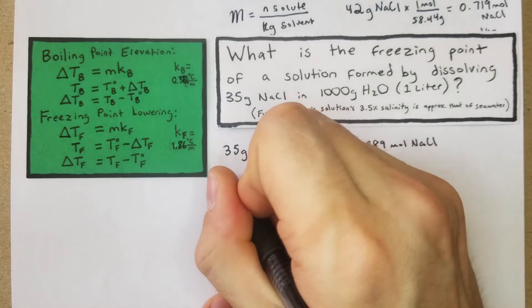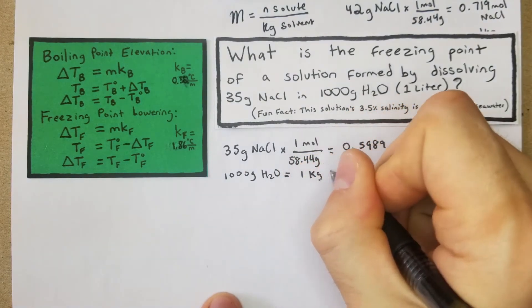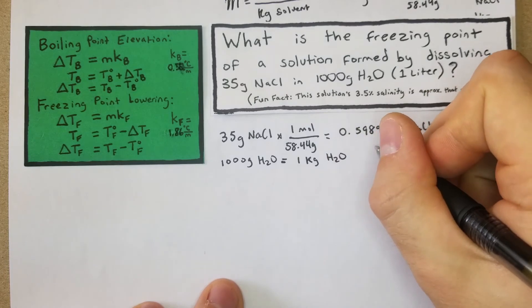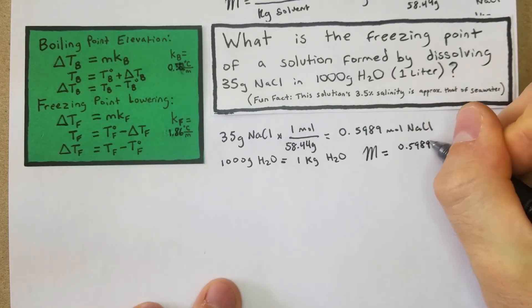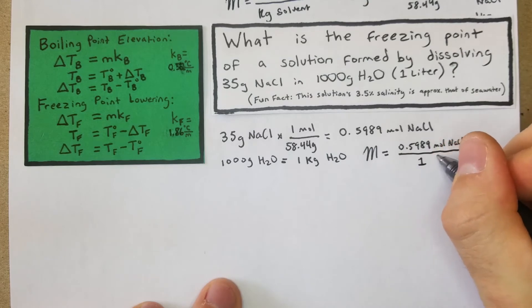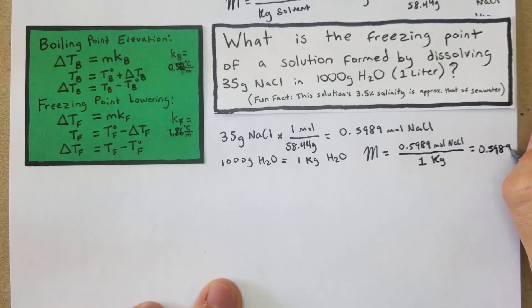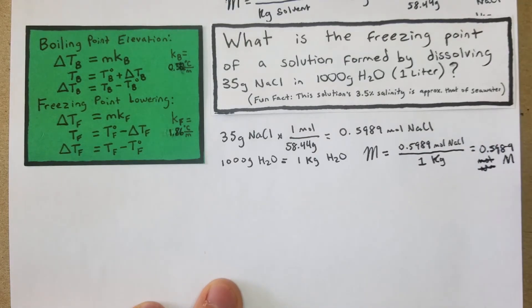We have 1000 grams of H₂O, which equals 1 kilogram of H₂O — that worked out very conveniently. We just move the decimal point with the metric conversion. The molality equals 0.5989 moles of NaCl over 1 kg of solvent, giving us 0.5989 molal. That's the molality of this seawater solution.